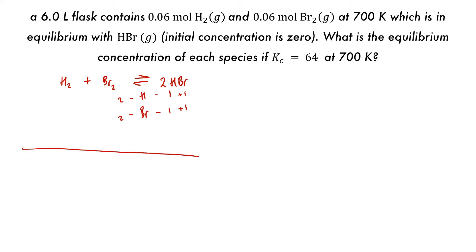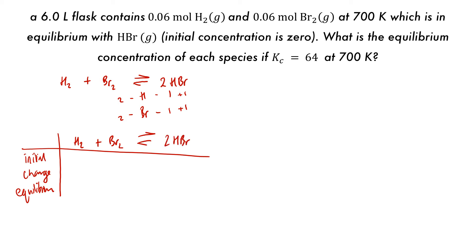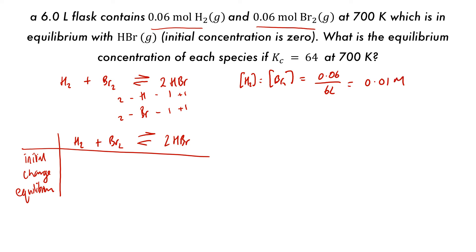We draw the ICE table with initial, change, and equilibrium rows, and put the balanced equation at the top. We're given moles, not concentrations, so we first calculate: concentration of H2 equals concentration of Br2 equals 0.06 moles divided by 6 liters, which gives 0.01 moles per liter. The initial concentration of HBr is 0. So we fill in 0.01 for both H2 and Br2, and 0 for HBr.